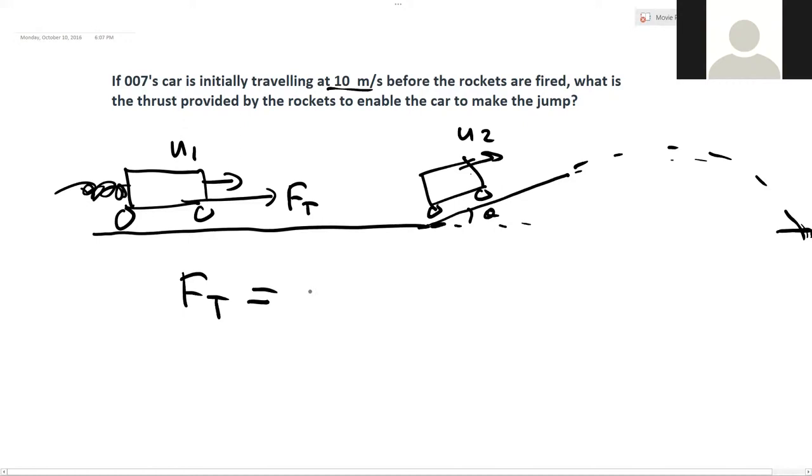Ft is equal to, well, let's call that car has a mass m, is equal to m into u2 minus u1 divided by delta t, where delta t is the time it takes to get from here to here.